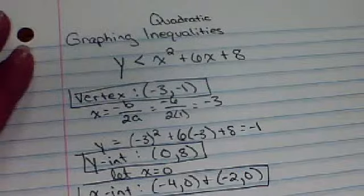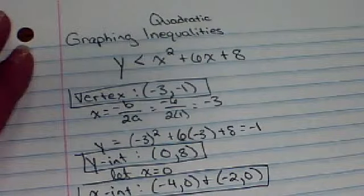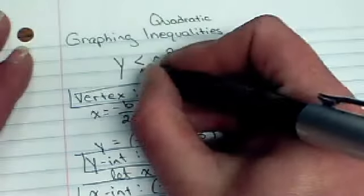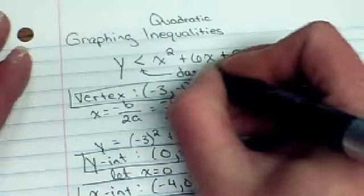Dashed means that we're going really close to but not including that boundary line. So that would have to be when it's not equal to. So if we look back at this problem, our boundary line is going to be a dashed line.